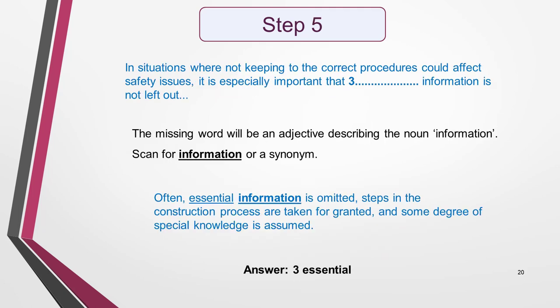On reading the summary sentence containing the third missing word, I can see that this missing word comes before a noun and is going to be an adjective describing the noun INFORMATION. I take INFORMATION as my key word, but am also mindful that a synonym might appear in the text. I scan the text. The text setter has been kind and INFORMATION is in the next sentence, which reads: 'Often essential information is omitted, steps in the construction process are taken for granted, and some degree of special knowledge is assumed.' The answer is obviously going to be the adjective associated with the word INFORMATION, which comes before it — it's ESSENTIAL. That's the third answer found.